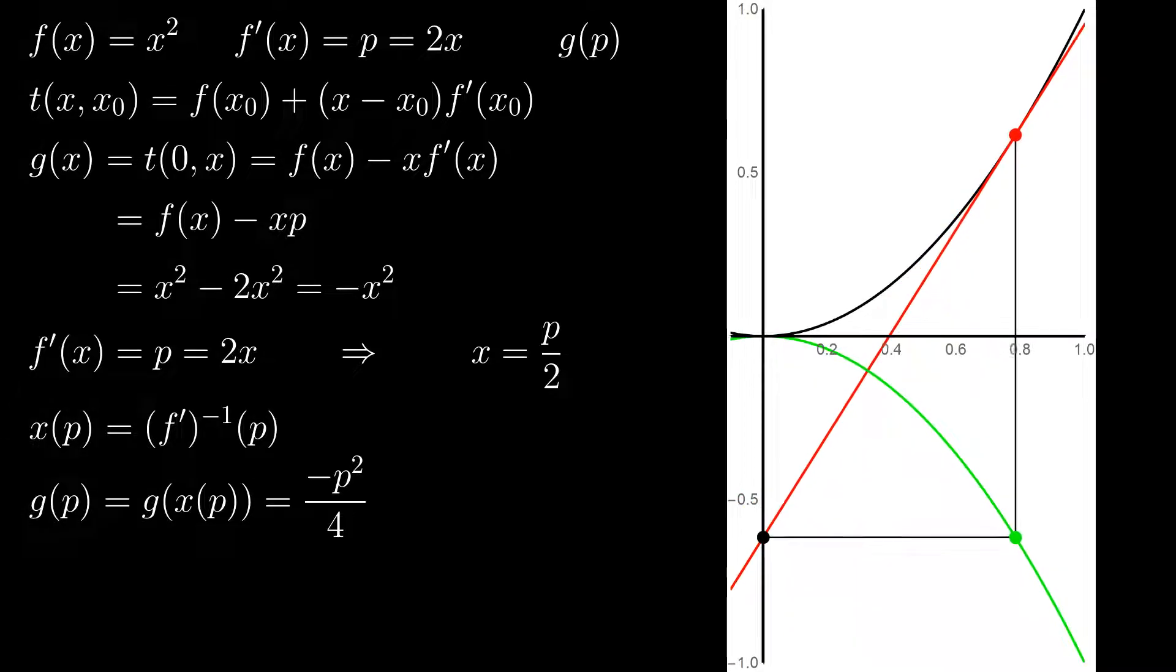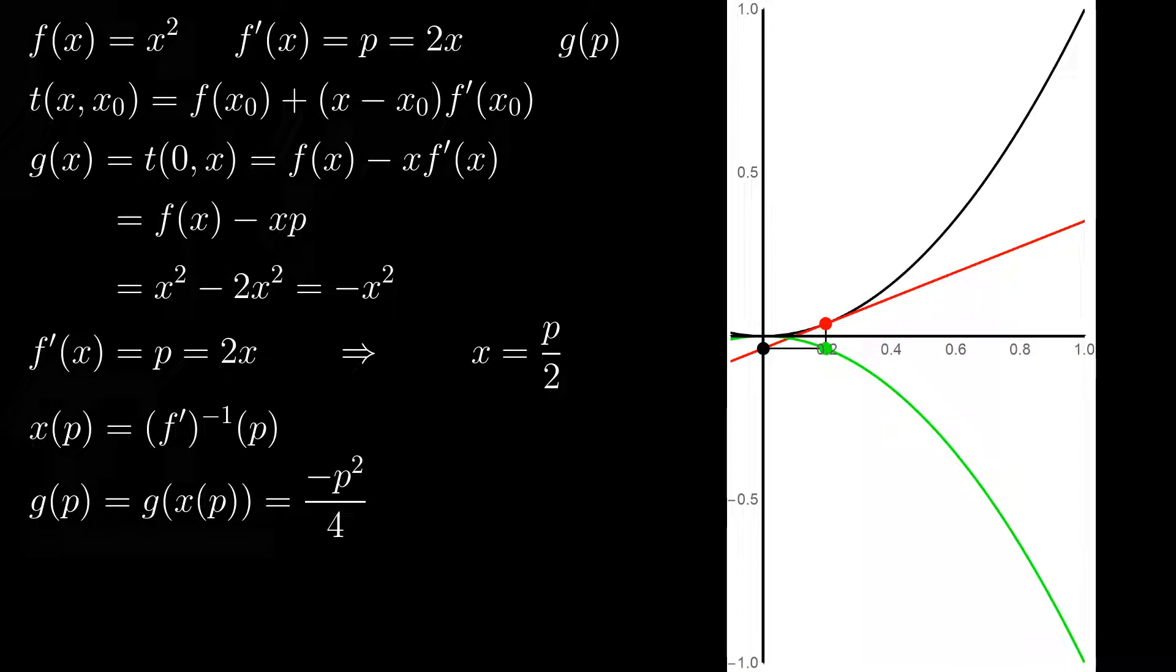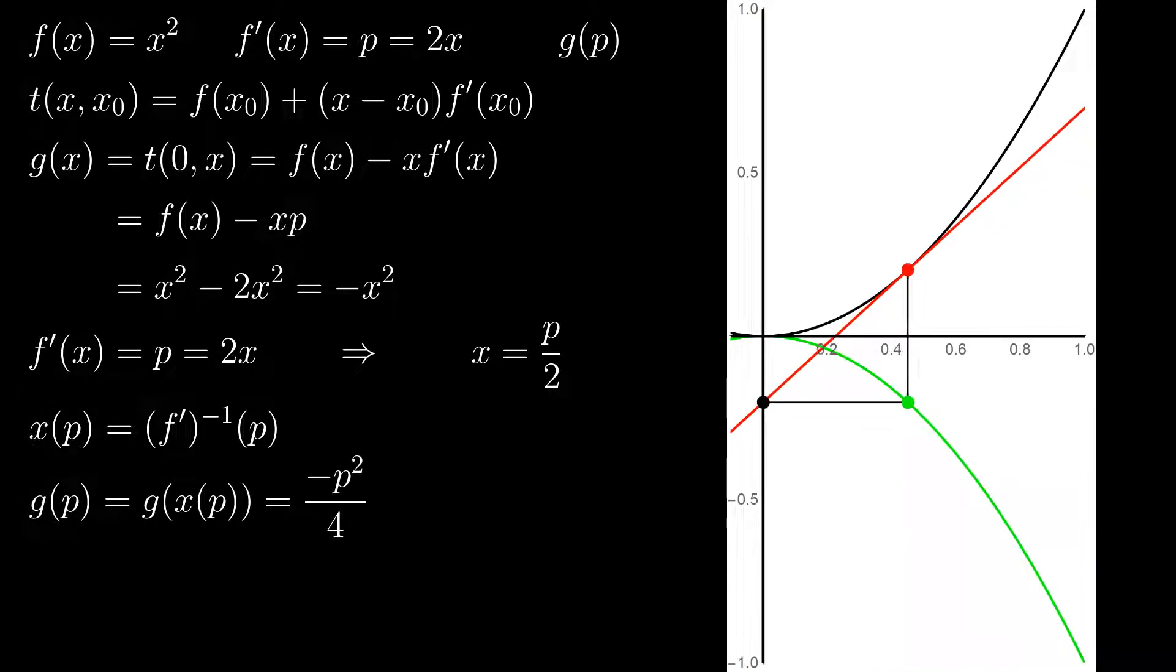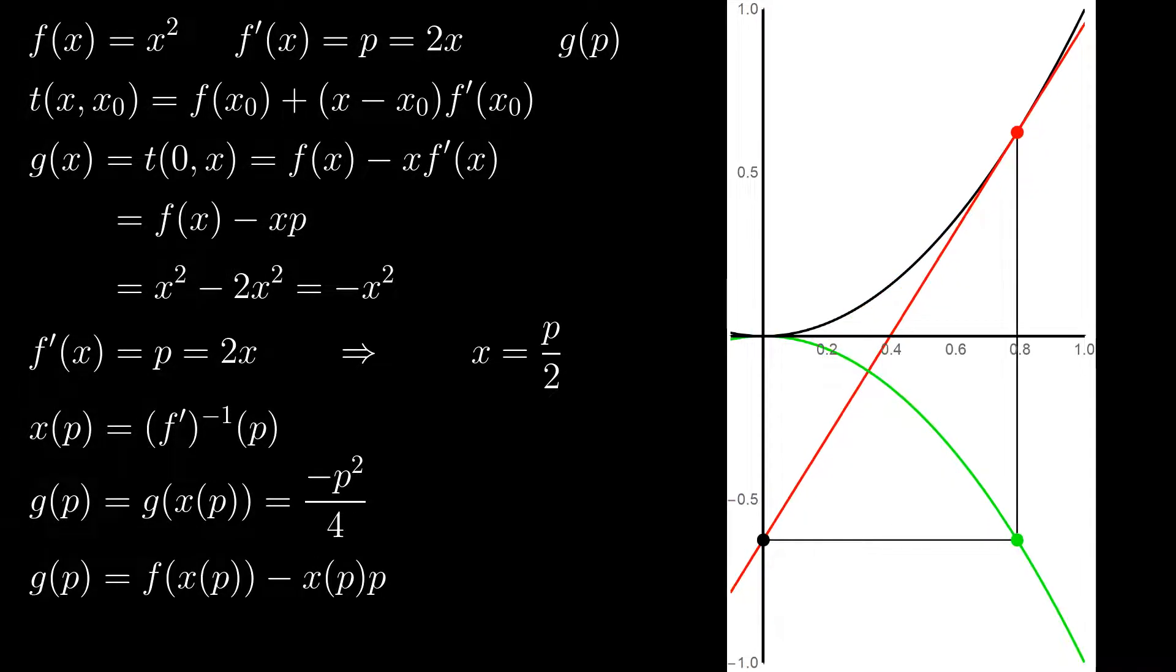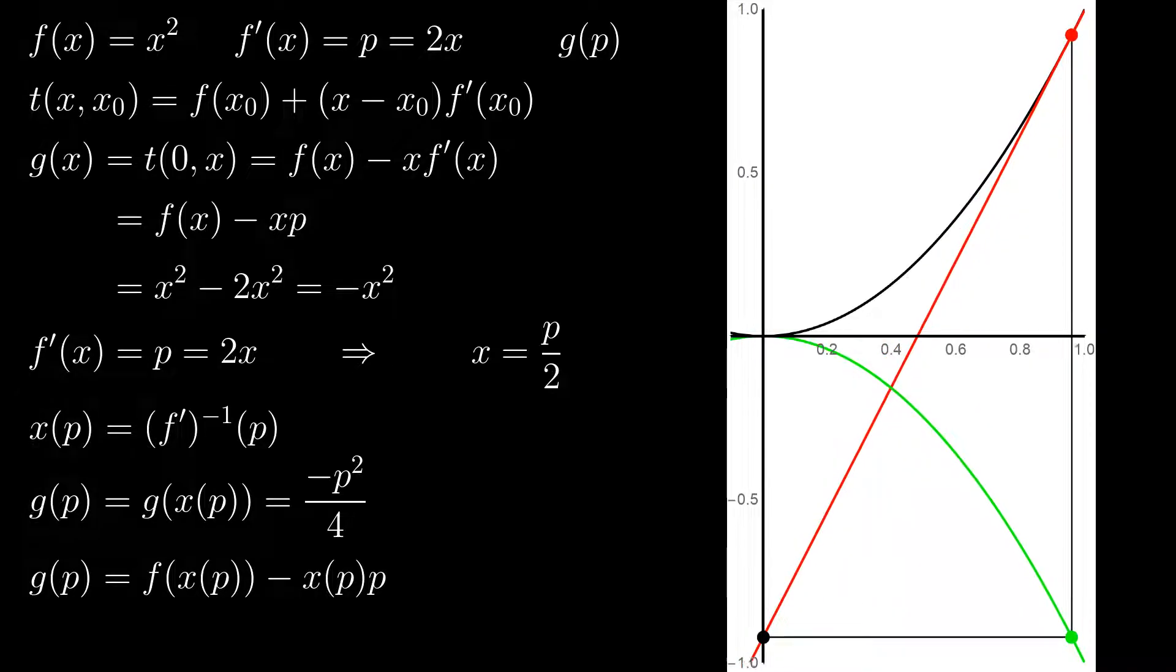which in our example yields minus p squared over 4. Note that to get to this x of p, we had to compute the inverse of f prime of x. Now, we computed the Legendre transform of our function, and simultaneously derived the general expression,